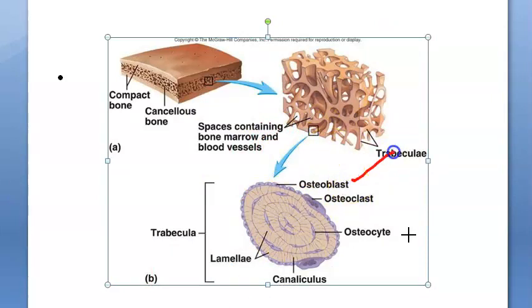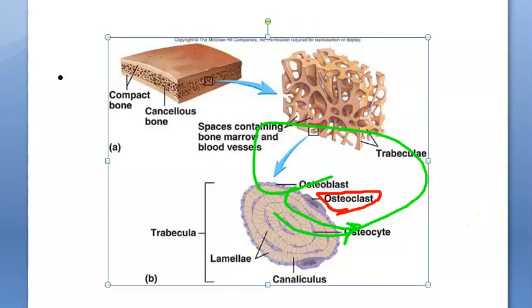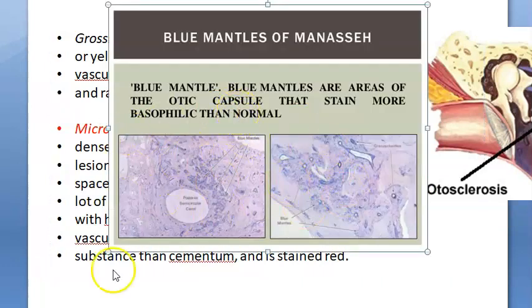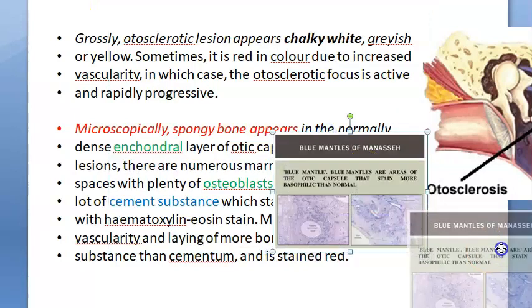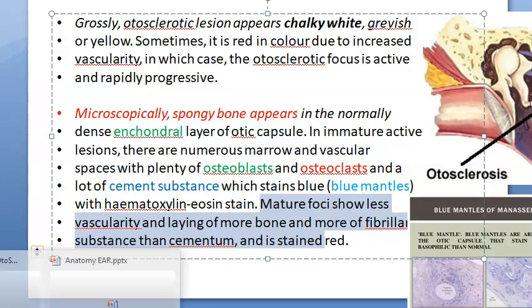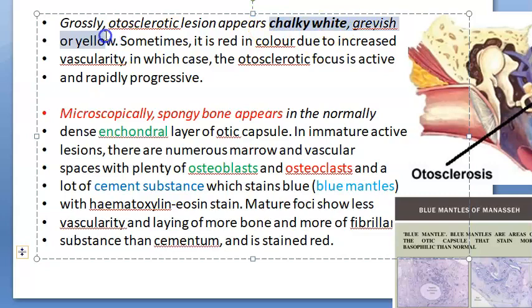Under the microscope, osteoblasts and osteoclasts are seen. Osteoclasts are the 'bad guys' that eat away bone, while osteoblasts give birth to new bone cells and can become osteocytes. A lot of cement substance is also visible, which stains blue with hematoxylin and eosin — these are called blue mantles — appearing more basophilic than normal.